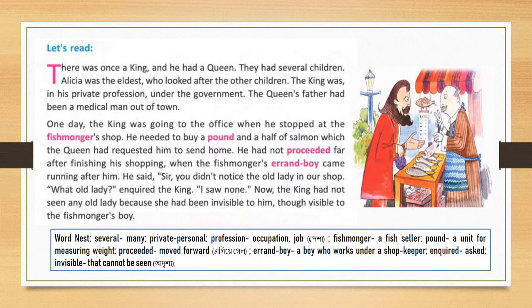There was once a king and he had a queen. They had several children. The name of the eldest child was Alicia, who looked after the other children.